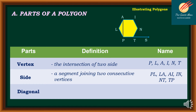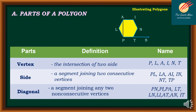For the diagonal — a segment joining any two non-consecutive vertices — examples include PN, PI, PA, LT, LN, LI, AT, AN, and IT. Notice that these are all line segments.